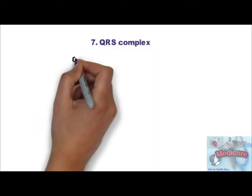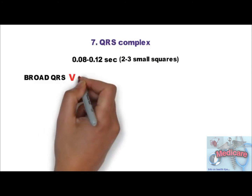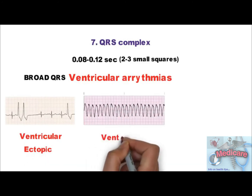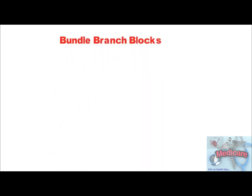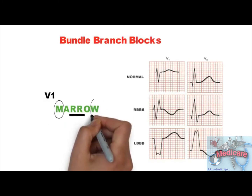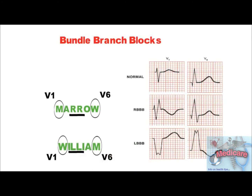Step 7 is QRS complex. Normally it is 0.08 to 0.12 seconds, that is 2 to 3 small squares. It is widened in ventricular arrhythmias — ventricular ectopic, ventricular tachycardia, ventricular fibrillation, or any pathology below the bundle of His — and also in bundle branch blocks. In RBBB, there is an M pattern in V1 and a W pattern in V6. For LBBB, remember the mnemonic 'William' — W pattern in V1 and M pattern in V6.